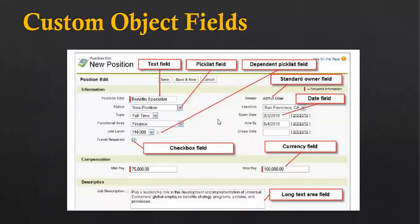This screenshot shows how fields look. Fields like Position Title, Status, Time, Functional Area, etc. are listed, with their data types mentioned alongside. Position Title uses a Text field, Status uses a Picklist field, Travel Required uses a Checkbox field, and Max Pay uses a Currency field. You need to know the appropriate data type, because without it you cannot create valid fields.